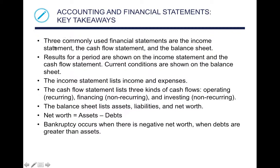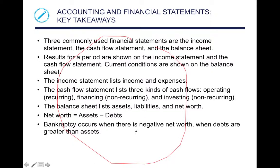Key takeaways from accounting and financial statements: the three commonly used financial statements are the income statement, the cash flow statement, and the balance sheet. Results for a period are shown on the income statement and the cash flow statement; current conditions are shown on the balance sheet. The income statement lists income and expenses. The cash flow statement lists three kinds of cash flow: operating or recurring, financing or non-recurring, and investing, which is also non-recurring. The balance sheet lists assets, liabilities, and net worth. Net worth equals assets minus debts, and bankruptcy occurs when there is a negative net worth — when debts are greater than assets. These slides are wordy, but keep these presentations handy because a lot of the information will be needed for the exam.